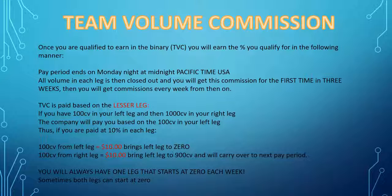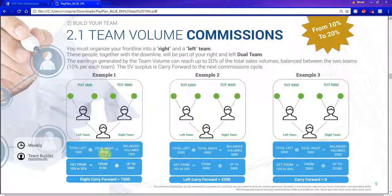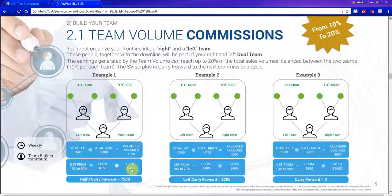Let's say you did 1,000 CV in your right leg and 1,000 CV in your left leg — they're going to pay you on that 1,000 CV and both legs would start at zero in the new week. Example one: if you had 1,500 CV in your left leg and 9,000 in your right leg, they pay you based on the lesser leg — 1,500. You earn up to 20%, which is $300, and your right leg carries forward 7,500 CV into the next business period.